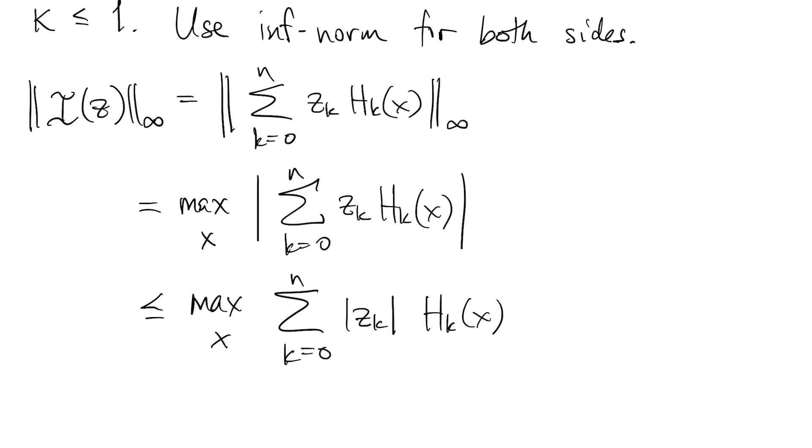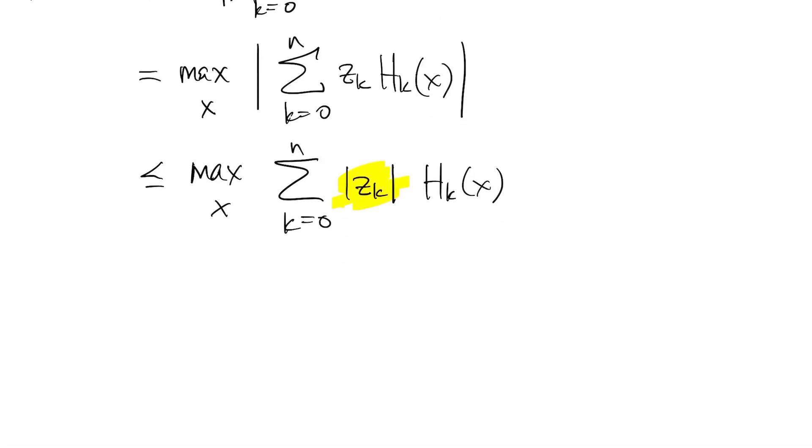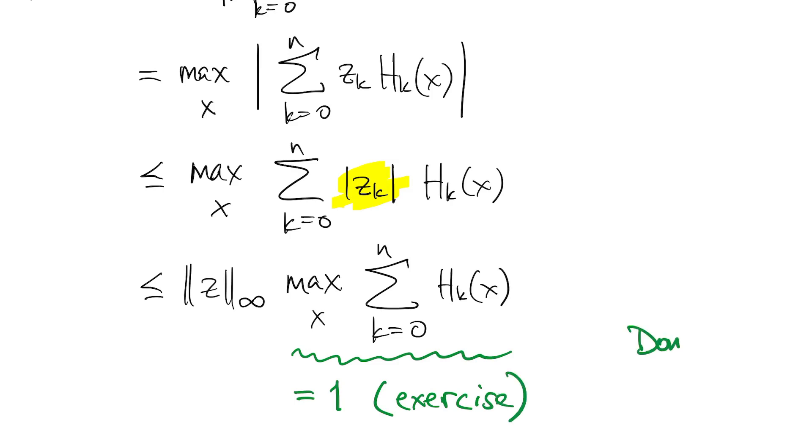We can easily bound this from above using the triangle inequality. But when we look at the absolute value of the zk's, each one is less than or equal to its maximum of all of them, and that's the infinity norm of z. So if we replace them all by the infinity norm of z, the thing can only get bigger. Now this remaining sum, there's an exercise in the book to show that that sum is equal to 1 for all values of x.